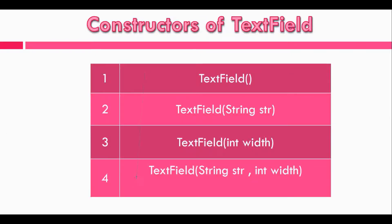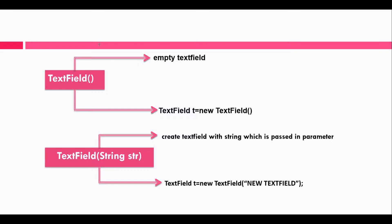Now let's see the constructors of TextField. The TextField class provides four constructors. The first is a default constructor, the second is with one String parameter, the third is with one integer parameter, and the last constructor is a combination of the second and third. We will see each constructor in detail. The first constructor creates an empty TextField — an example is like this.